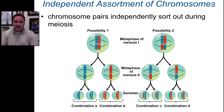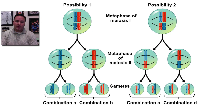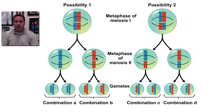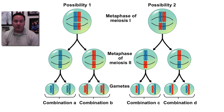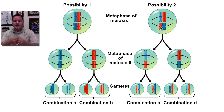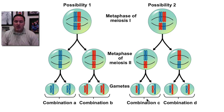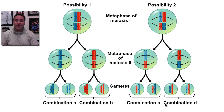During meiosis I and II, there are different possibilities for how chromosomes can line up. For example, you could have big blue and little blue on the left, and big red and little red on the right — separating gives all blues on one side and all reds on the other. But another possibility in this 2N=4 system is big blue and little red on the left, giving you combinations of big blue with little red, and big red with little blue. So in this simple two-chromosome-pair system, you can end up with four different kinds of gametes.